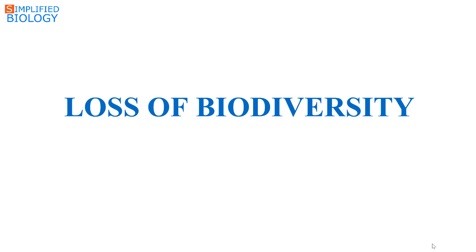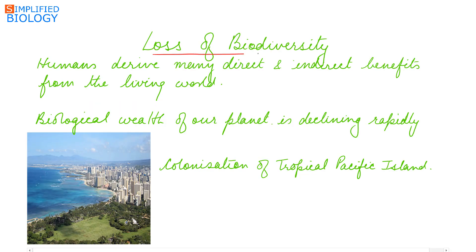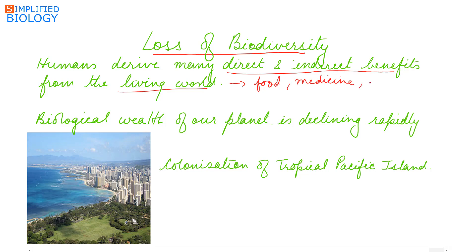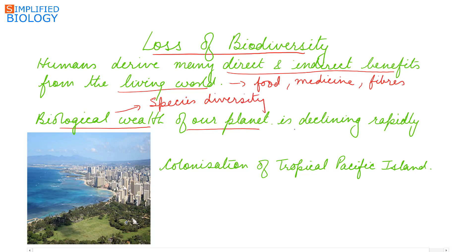Welcome to Simplified Biology. Today's topic is loss of biodiversity. Humans derive both direct and indirect benefits from the living world in the form of food, medicine, shelter, fibers, timber, etc. This is possible only due to the diversity of organisms. Now this biological wealth of a planet — that is species diversity — is now declining rapidly due to human activities.